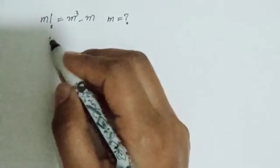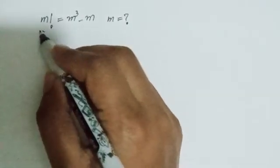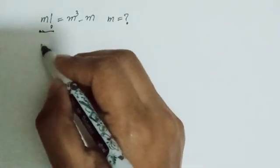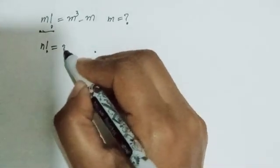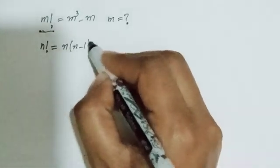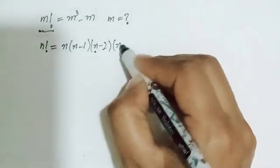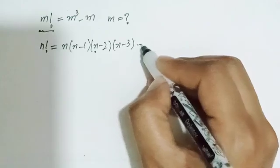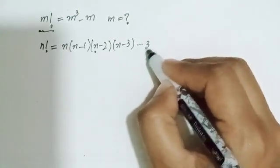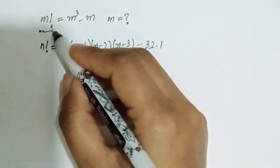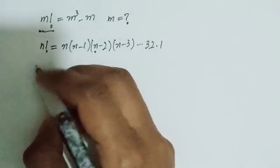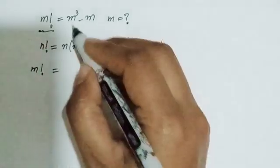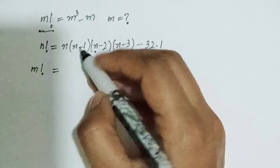Let's start our question. First, I want to discuss this term. I can write n factorial as n times (n-1) times (n-2) times (n-3) and so on up to 3, 2, and 1. So I can use this in writing m factorial. So m factorial equals m cubed minus m.